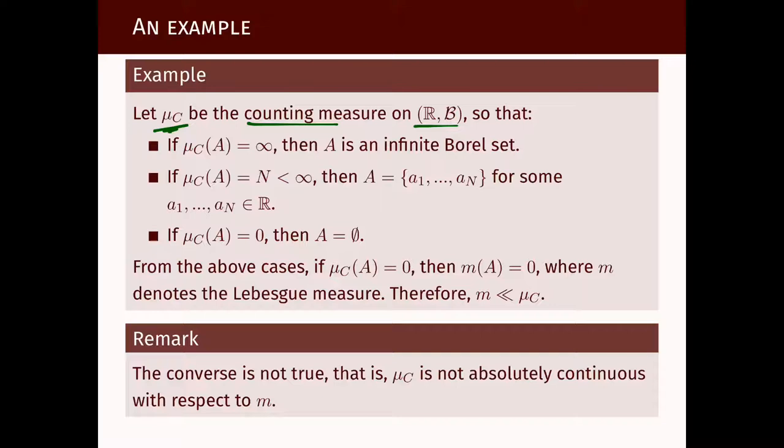If we take a Borel set A, its counting measure μ_C(A) is infinite when A has infinitely many elements. Its measure is N when the set A has exactly N elements. If the measure of a set is zero,